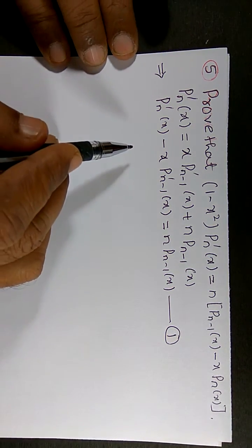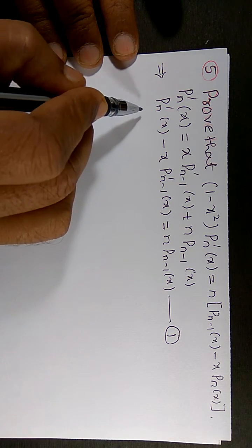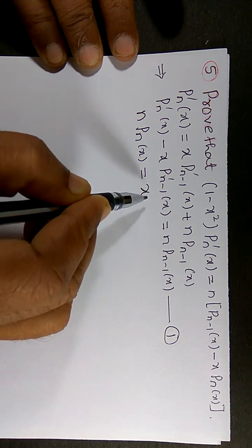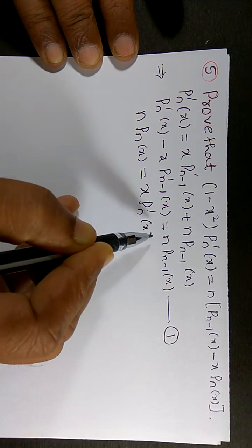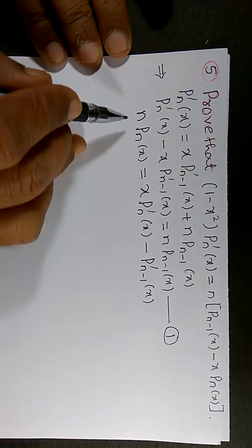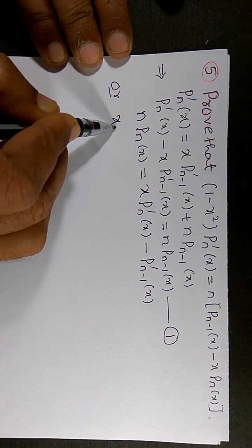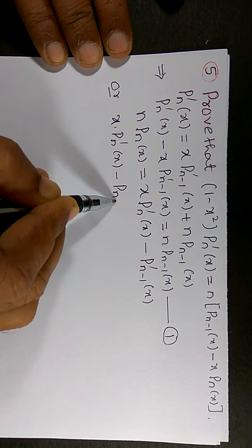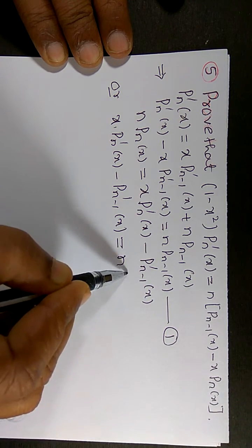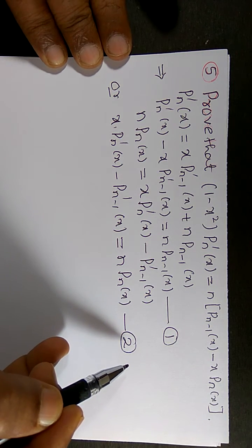Now I want to use another recurrence relation, namely recurrence relation 2. From recurrence relation 2, I can obtain: n into Pₙ of x is equal to x times of Pₙ prime of x minus Pₙ₋₁ prime of x. I will call this Equation 2.